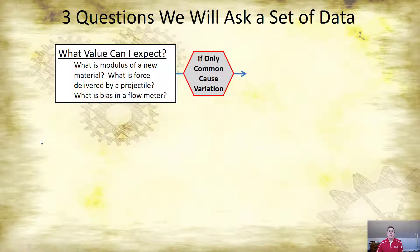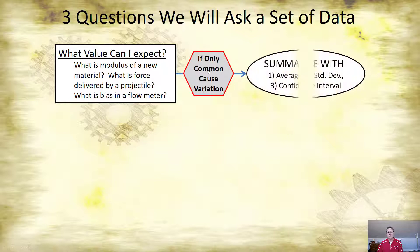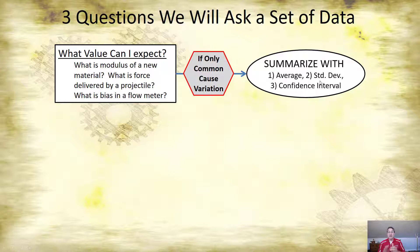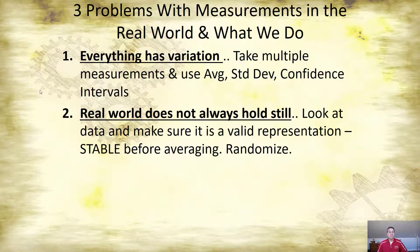We said we're going to ask three questions of data. The first is: what can I expect from you? Because of random variables — if it's only common cause variation — I can expect an average plus or minus two or three standard deviations. I can do a confidence interval; I have a band of where I'll expect those parts to fall.